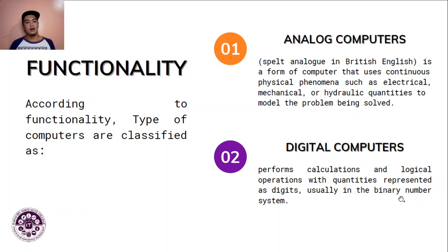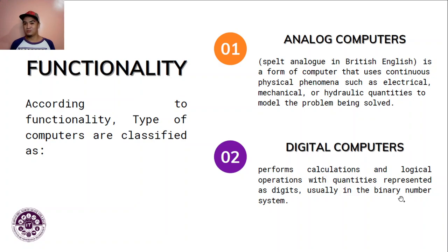According to functionality, we again have analog, digital, and hybrid computers. An analog computer uses continuous physical phenomena such as electrical, mechanical, or hydraulic quantities to model the problem being solved. We don't normally see these in a typical office — most often they appear in warehouses or manufacturing buildings, such as hydraulic presses that flatten metal without requiring human labor.